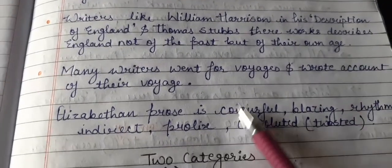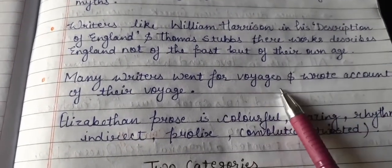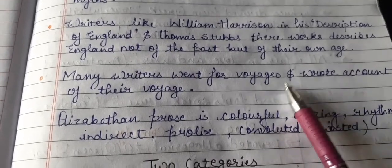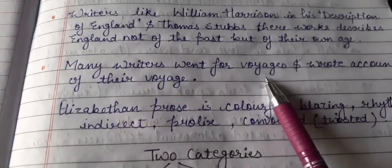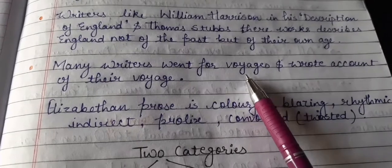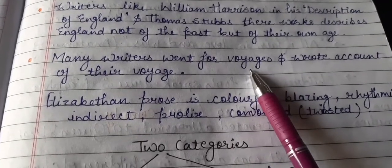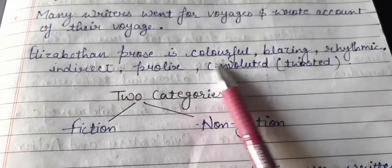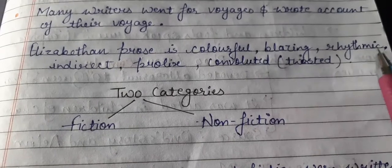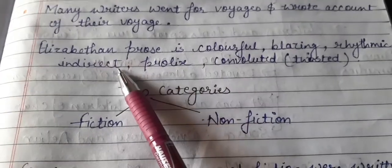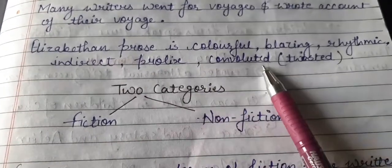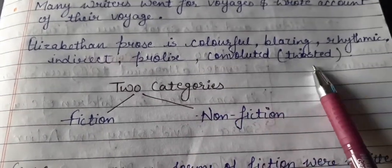During this age, many writers began navigation and travel, so writers began to write their voyage accounts in prose style. Elizabethan prose is more colorful, blazing, and rhythmic. It is in a direct tone, prolix and convoluted, disinterested manner.